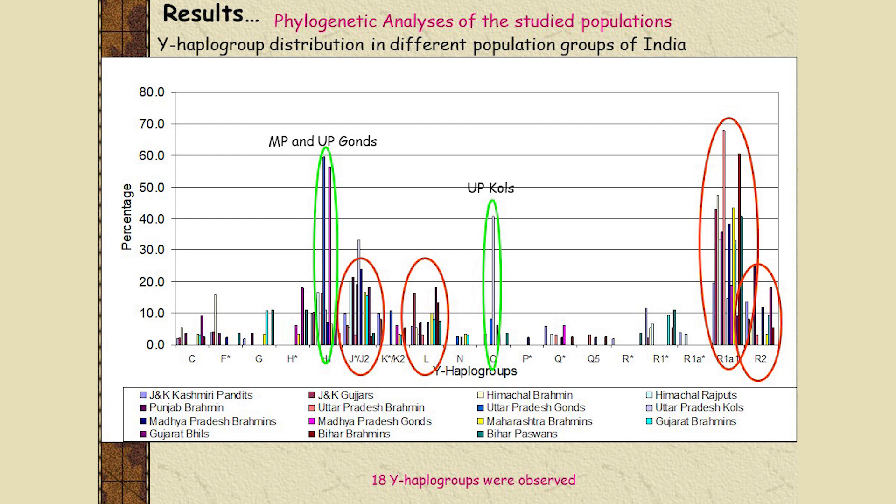Except for a few groups appearing restricted to particular populations, most haplogroups were distributed across all population groups. Specifically, haplogroup R was present in almost all population groups studied. There were some differences in frequency in a few groups, but overall R was distributed irrespective of caste or social status.